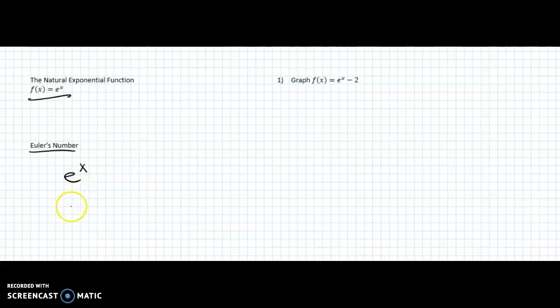The e, it's an irrational number. It's a little bit like pi in that regard. It's a repeating decimal that goes forever. And it's 2.71828, and then it continues on and on.